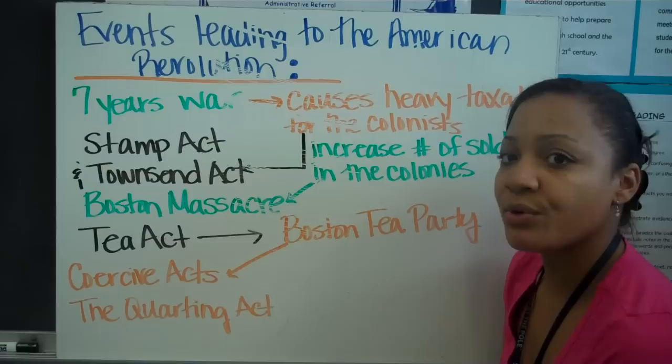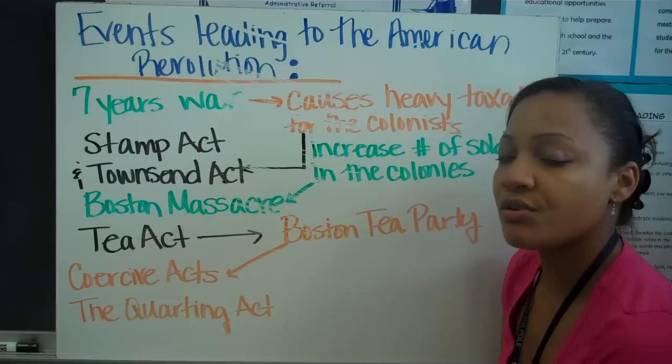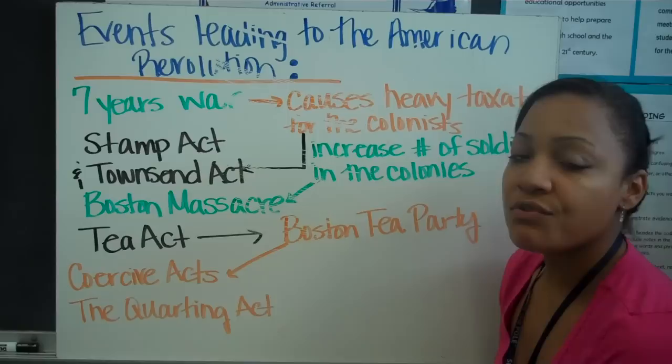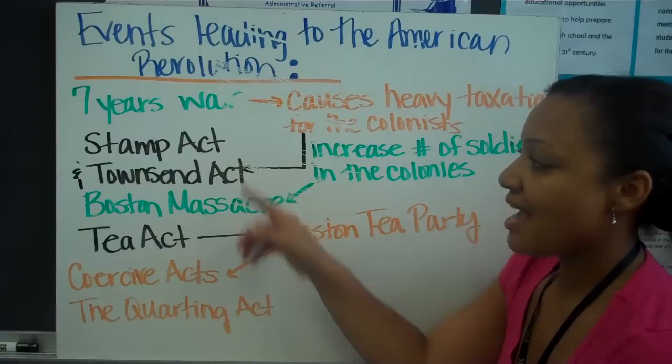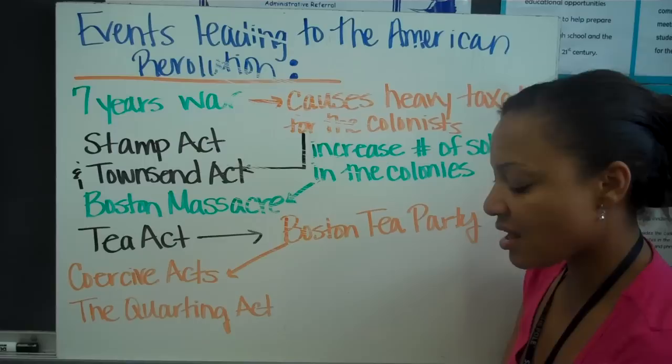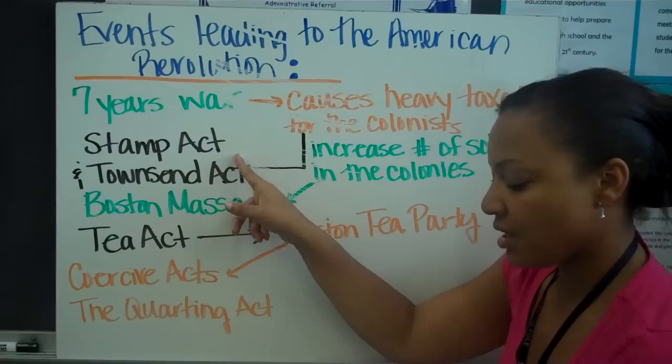The Seven Years War is going to cause heavy taxation for the colonies, because the British Empire had to pay for the war and support the troops now in the new land protecting the colonies. So they issued several different taxes — one being the Stamp Act and the Townshend Act. The Stamp Act is taxes on paper products. The Townshend Act taxed paper, tea, glass, lead, and some paints.